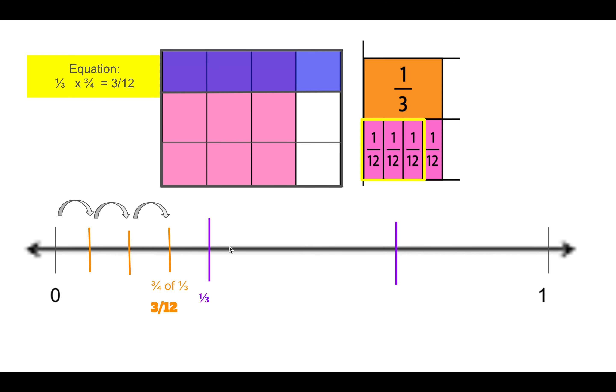So the number line and the blocks are very similar to each other. And you can check because when you make all the pieces on the number line the same size, you'll count 12 pieces. So you put four pieces in this third, four pieces in this third, four pieces in this third for a total of 12 pieces.